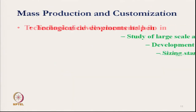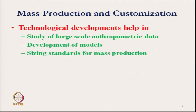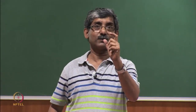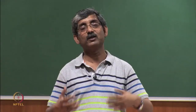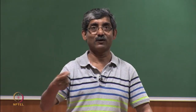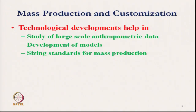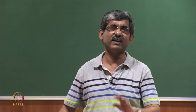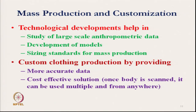This is one aspect which is presently available - if we go to any shop, we can take a particular size of garment and it generally fits, based on mass anthropometric data. But sometimes custom-made clothing is produced, which is more accurate. The advantage is that it is a cost-effective solution, because once my body scanned data is taken, it can be stored and automatically reproduced.